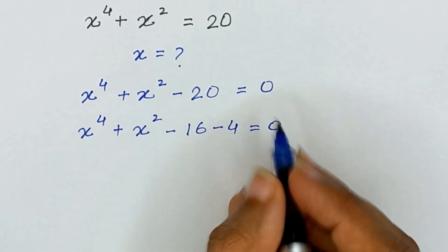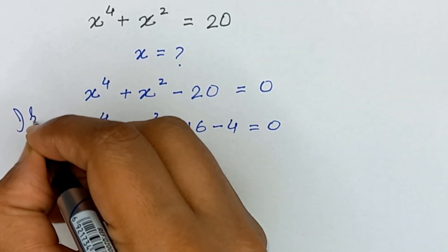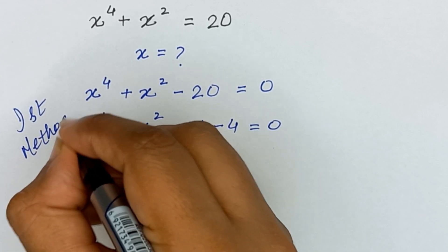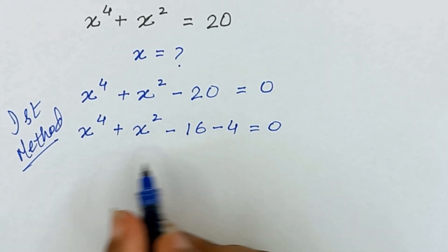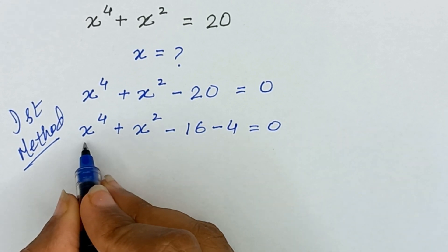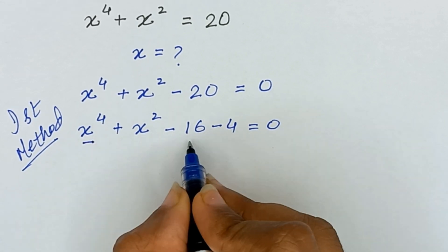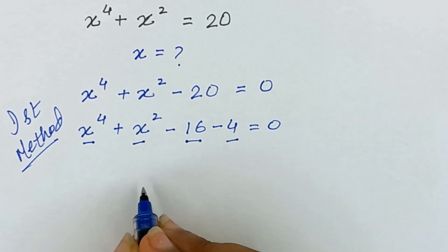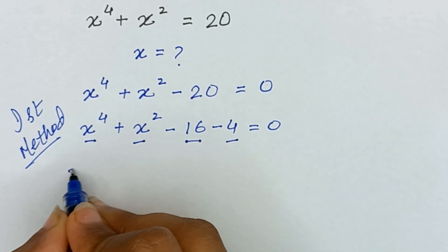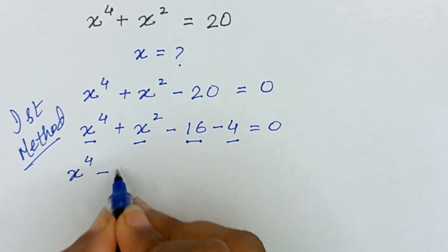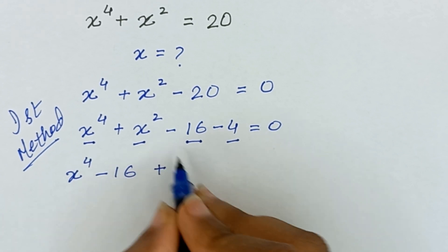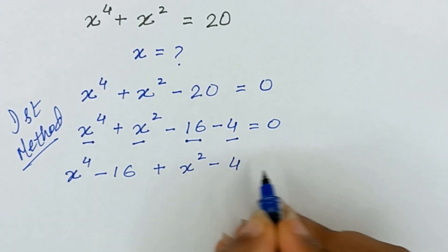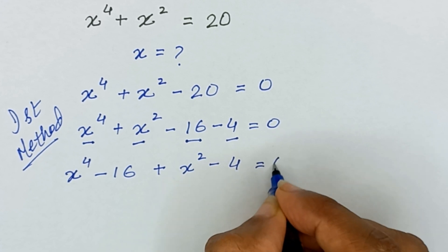We will solve this question with two methods. This is our first method. I will combine x raised to the power 4 with minus 16 and x squared with minus 4. So we can write it as x raised to the power 4 minus 16 plus x squared minus 4 is equal to 0.